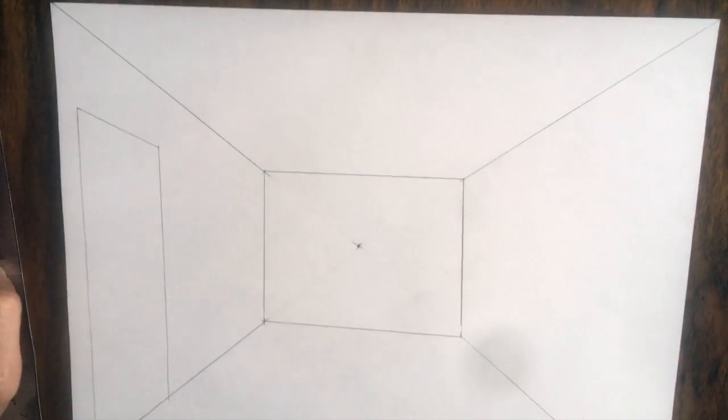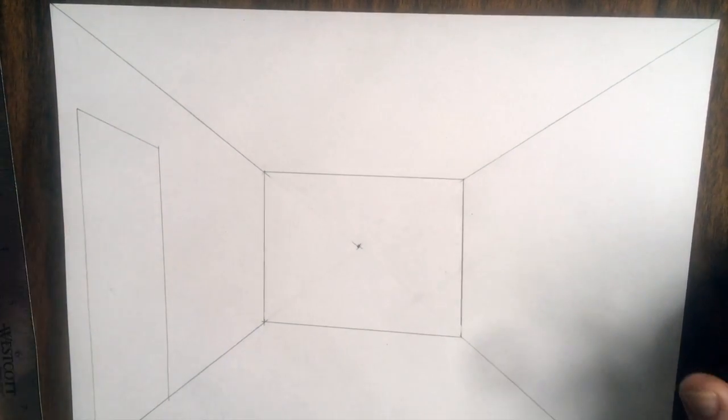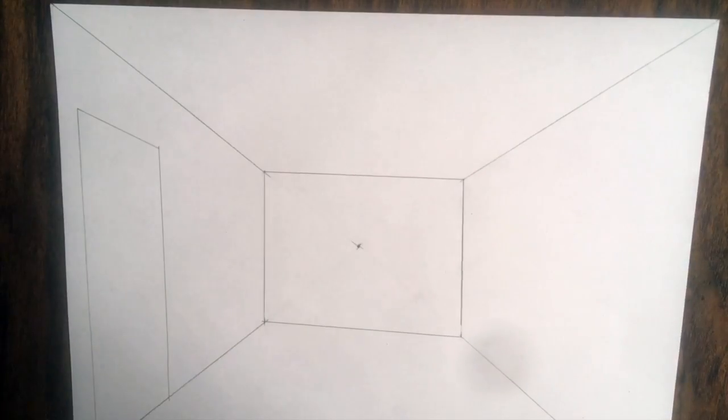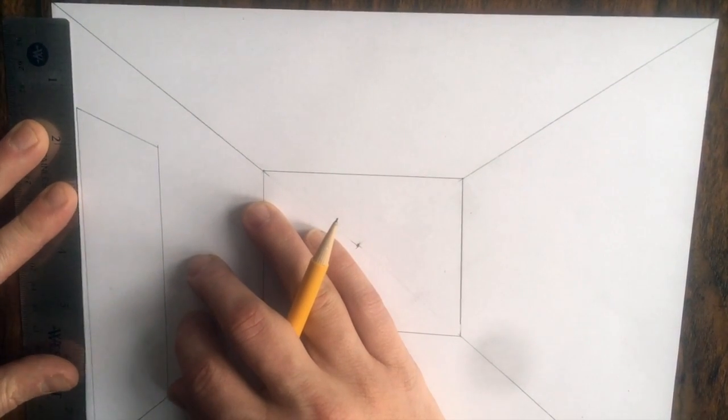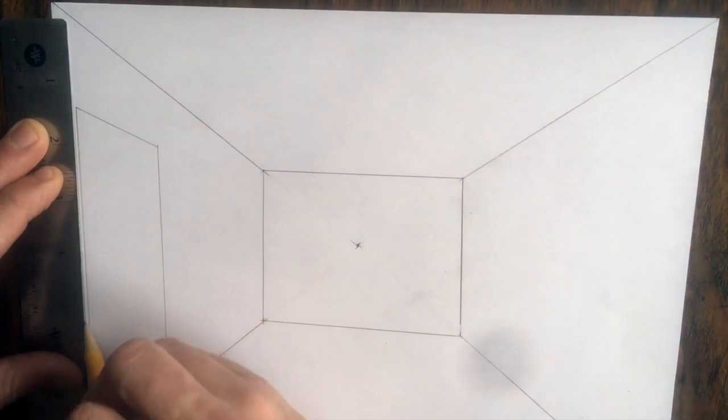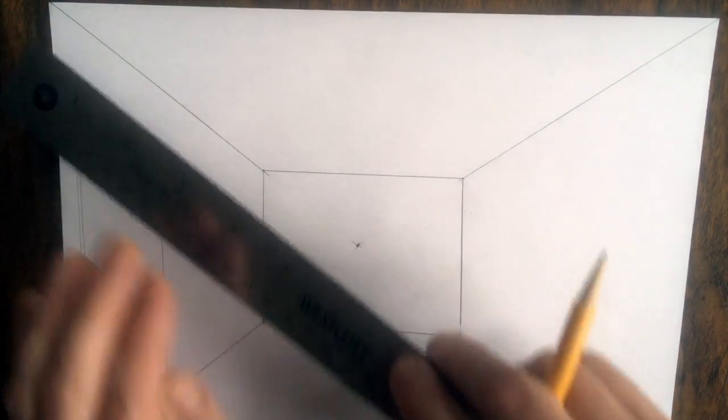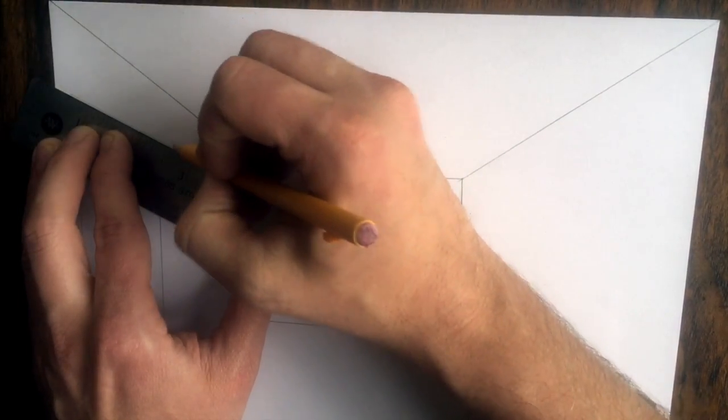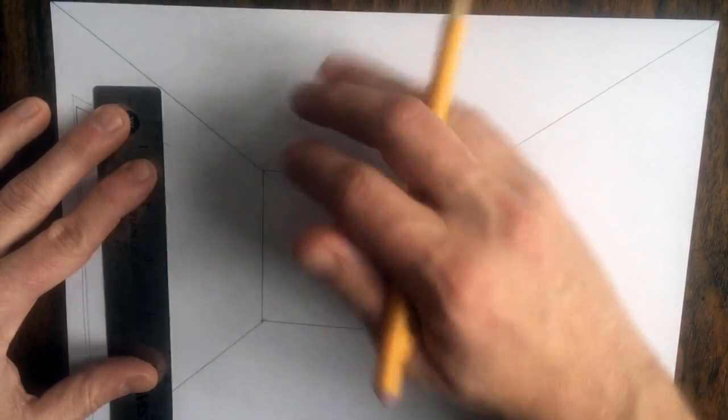So right now it's a really basic door. Doors have frames, so let's build the frame. The frame is really easy to build. You just line your ruler up and draw another vertical line. Then from the top of that vertical line towards the vanishing point, and then again another vertical line.